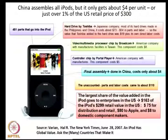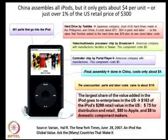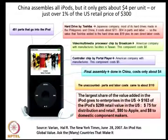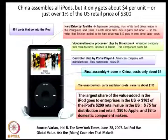Consider the iPod: China assembles all iPods but gets only four dollars per unit — just over one percent of the US retail price of around $299. The largest share of value goes to enterprises in the US: of the $299 retail value, $75 goes to distribution and retail, $80 to Apple, and $8 to domestic component manufacturers. This shows how much profit US manufacturers can make while low-cost assembly is done overseas.